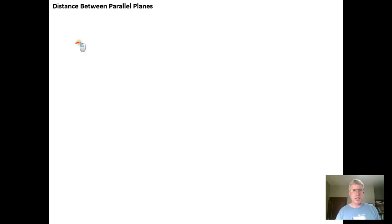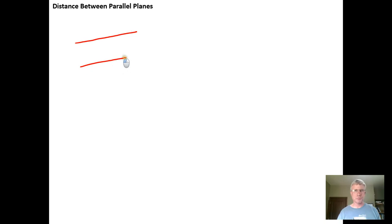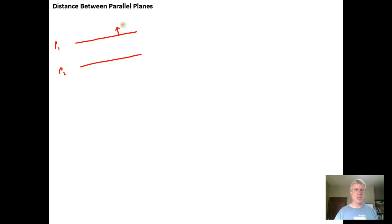Suppose we have two parallel planes — here's a plane, here's a plane, and the planes are parallel. We know that if we have the equations of these planes, we also know vectors that are normal to those planes. So if this is plane one and plane two, and we have the equations for both planes, we also have the equations of the vectors that are normal or orthogonal to those planes.